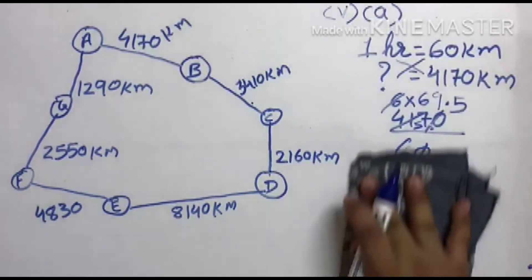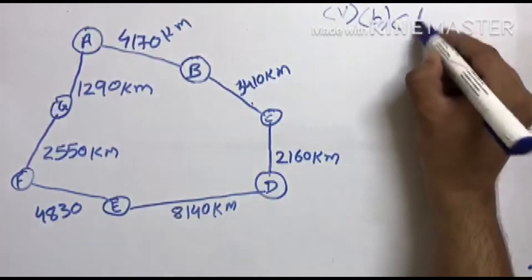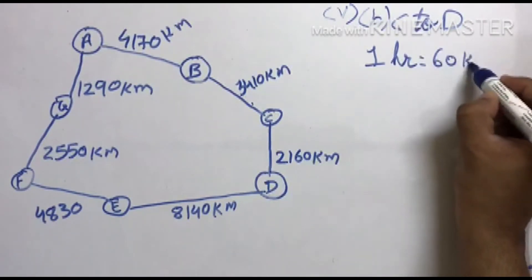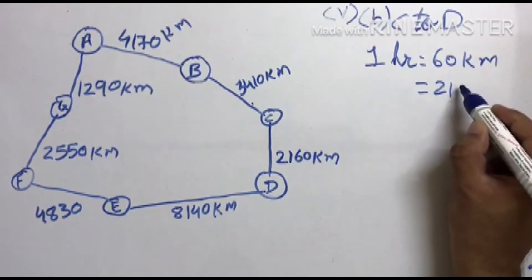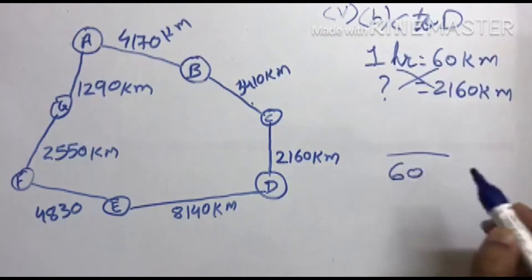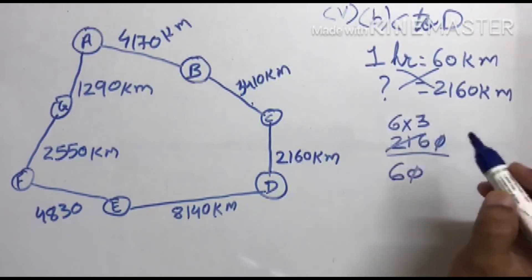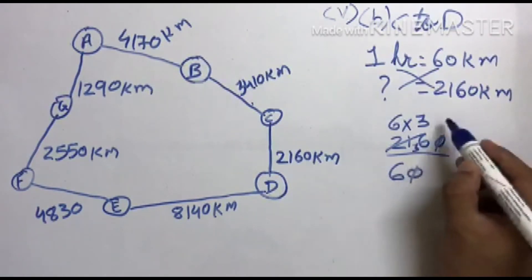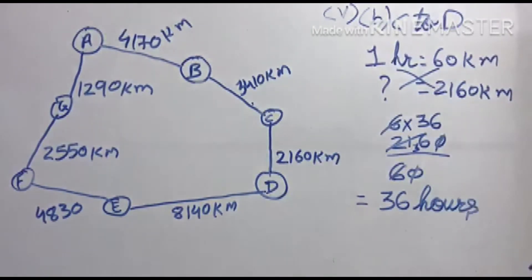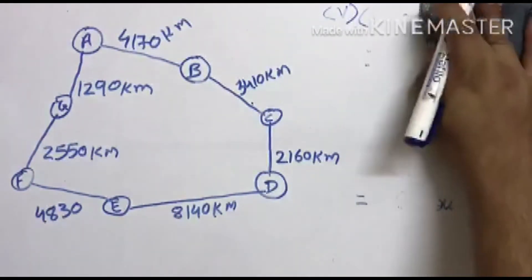Fifth question, sub-question 2: C to D. 1 hour में 60 km। C से D की distance 2160 km है। 2160 ÷ 60 = 36 hours. C से D पहुंचने के लिए 36 hours लगेंगे। Understood.